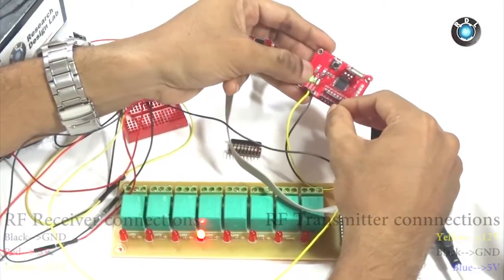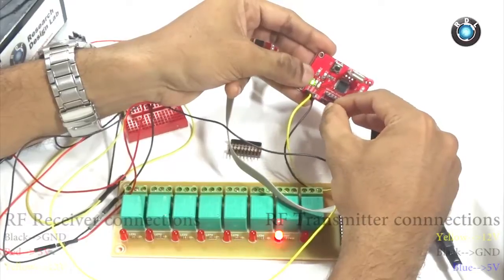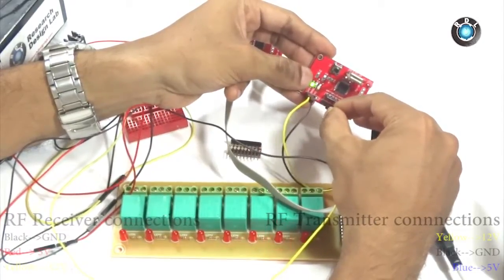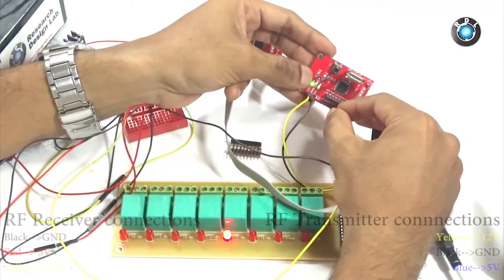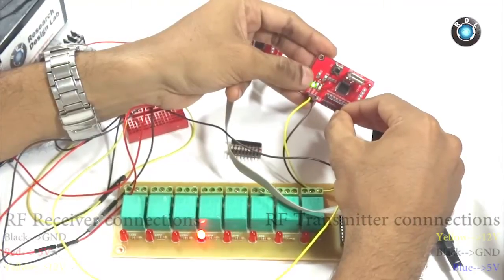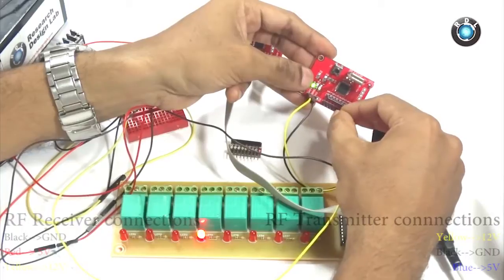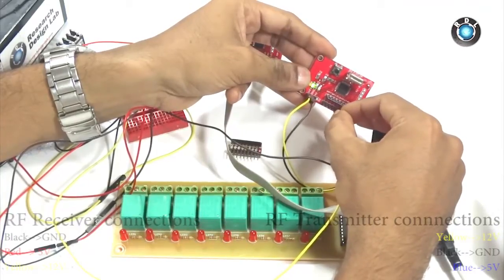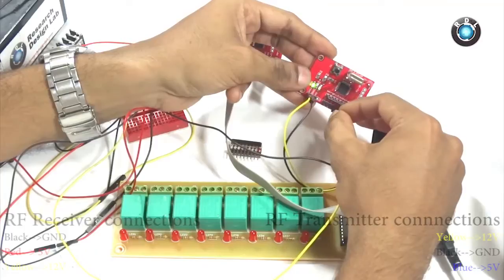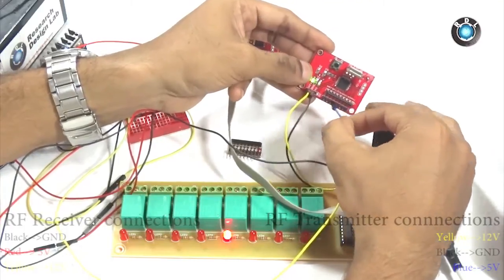However, make sure you make proper connections to the board. For example, the transmitter module here, I have given 12V. You could also give 5V if the range is not a problem to you. But for the receiver module, please connect 5V only. I repeat, receiver module works with only 5V. Any voltage higher than 5V may damage your receiver module.